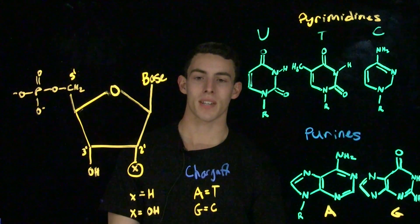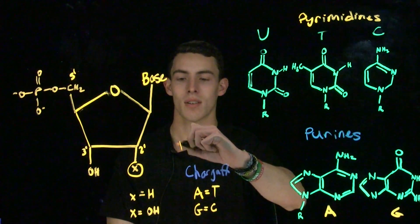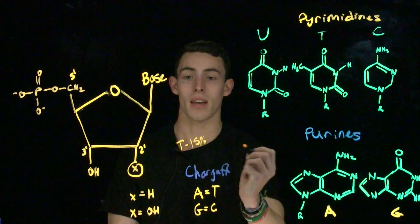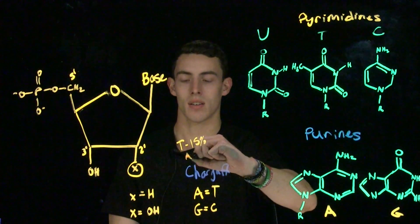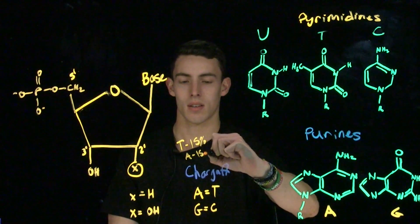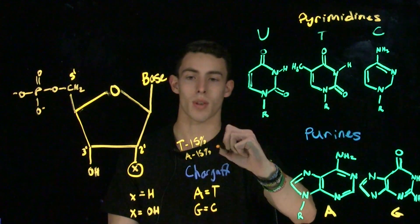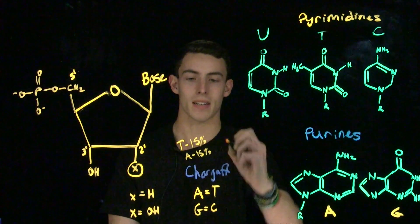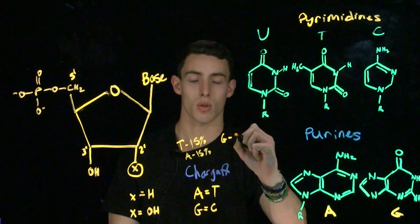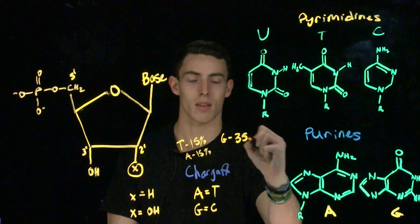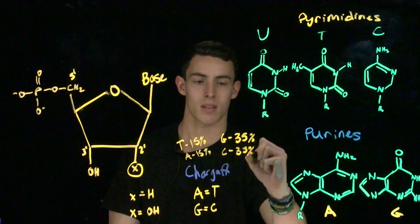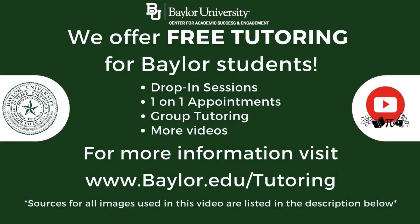For example, if the percentage of thymine in a cell is 15%, then the percentage of adenine is also 15%, and these add up to 30%. 100 minus 30 is 70, meaning that the percentage of guanine is 35%, and cytosine is also 35%.